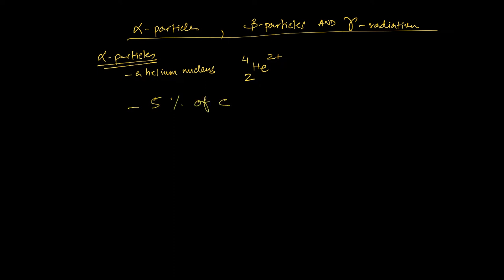That might seem fast, but alpha particles are actually the least penetrating of the three types of emission. They can pass through a thin piece of paper but are unable to penetrate a thin card. Their range in air is only a few centimeters.